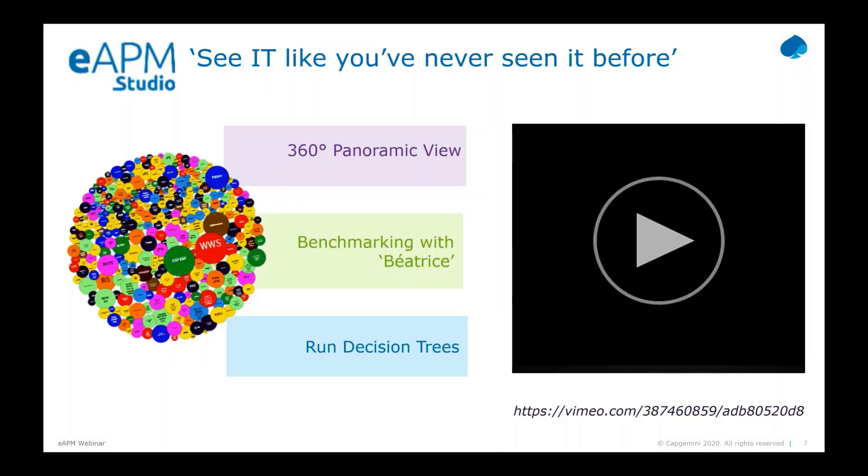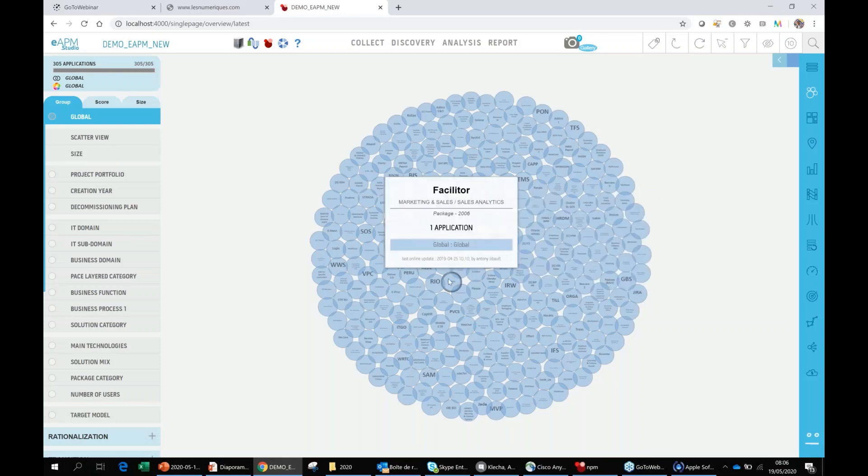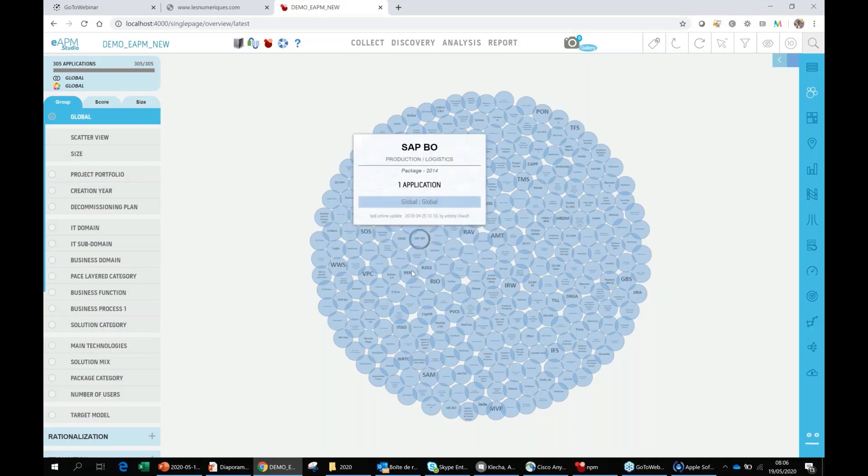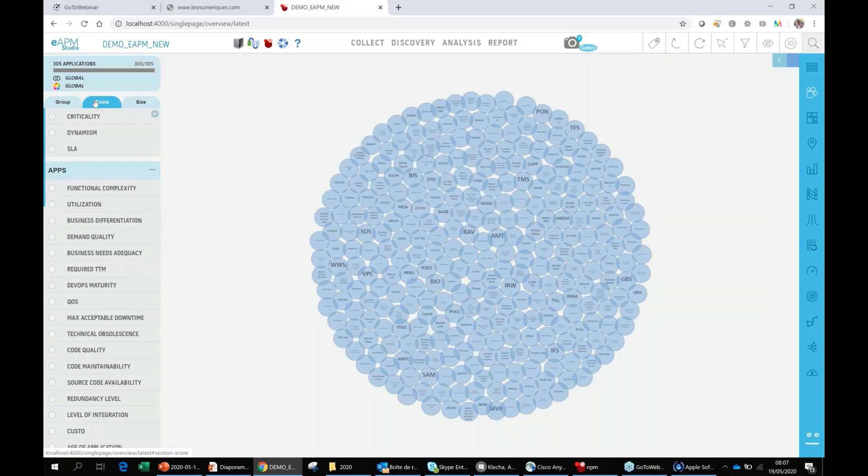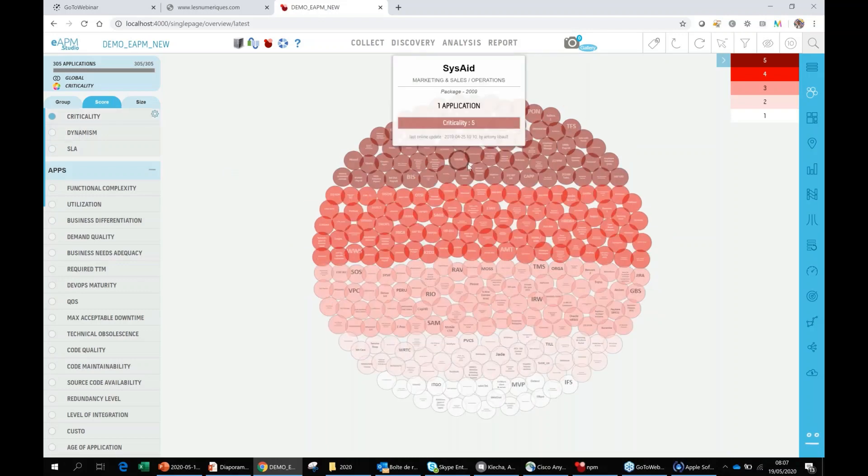Let's jump directly into the demo. You can see on your screen that kind of brain made of bubbles. Each bubble here is an application. In the pop-up, you can see the name of the application and some key characteristics. When we start EAPM, we first collect data. The idea is to describe the IT ecosystem, first leveraging existing repositories such as CMDB, APM tool, Excel files, ticketing tool, whatever. We are fully agnostic from the source of data. When we collect the data, we describe the application portfolio first. Here you see 305 applications.